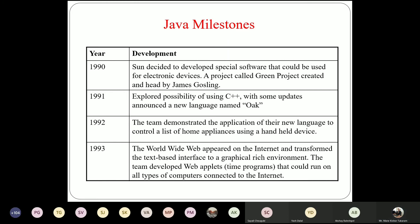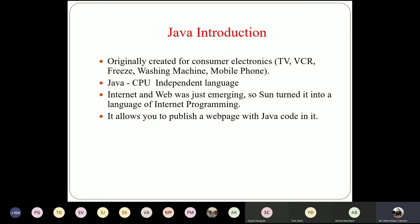Initially, Java was developed for electronic devices such as TVs, VCRs, washing machines, mobile phones, and refrigerators. These devices have embedded programming. In the initial phase of development, it was only related to consumer/electronic devices. Later, it was extended to web-based programming as well as distributed computing.